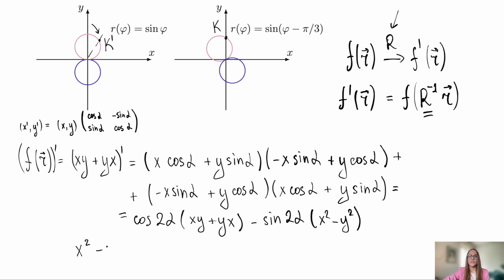During the same procedure with the function x squared minus y squared, we get the following result. Notice that we have an interesting situation. These two functions under an arbitrary rotation around the z-axis transform simply into linear combinations of each other. This was not something that had to happen. We specifically chose these functions this way.